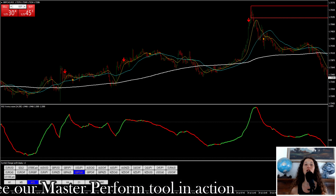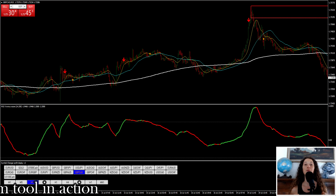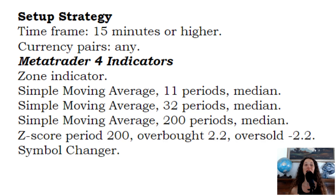The system proposed here is very simple but very effective, based on the 200-period moving average and the Z-score — the measure of the deviance from the mean. The setup of the strategy: timeframe 50 minutes or higher, currency pairs any. MetaTrader 4 indicators: Zone indicator, Simple Moving Average 11 periods median, Simple Moving Average 32 periods median, Simple Moving Average 200 periods median, Z-score period 200, overbought 2.2, oversold minus 2.2.